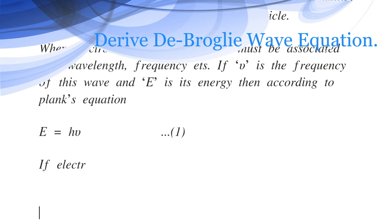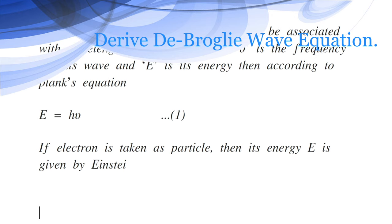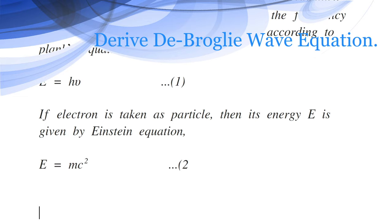If electron is taken as particle, then its energy E is given by Einstein's equation, which is energy E equals mc square. This is equation number 2, where m is the mass of the particle and c is velocity of light.